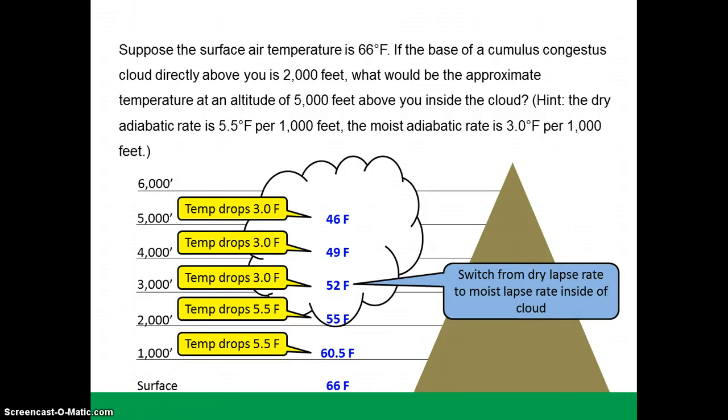Lifting the parcel 1,000 more feet reaches our goal of 5,000 feet above ground level. As you can see, the temperature drops 3 more degrees Fahrenheit per 1,000 feet and we reach the temperature of 46 degrees Fahrenheit. This is the temperature that the question is looking for of the parcel temperature at 5,000 feet inside the cloud. Thank you.